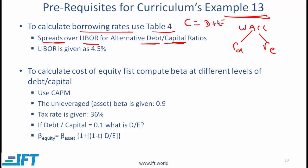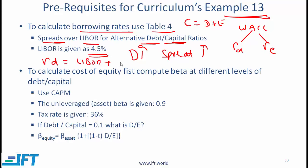LIBOR is the interbank offer rate; in this case it is given as 4.5%. As the company takes on more debt, the spread over LIBOR goes up, and the cost of debt essentially equals LIBOR plus the spread. In our example, LIBOR stays the same but as debt increases the spread rises, so the cost of debt goes up — which makes sense, since more debt means more risk and a higher required cost of debt.